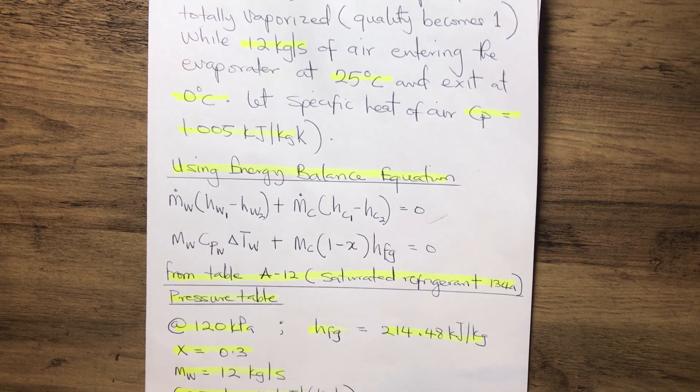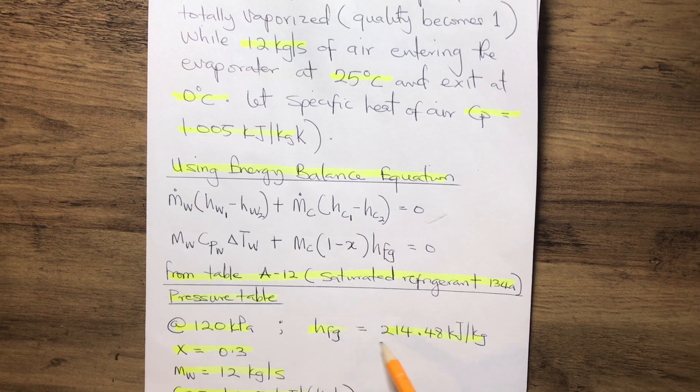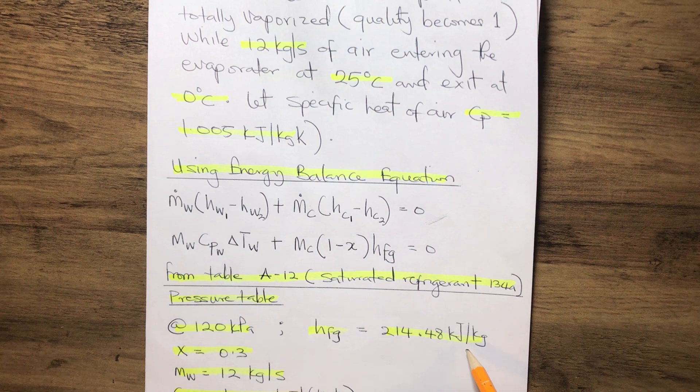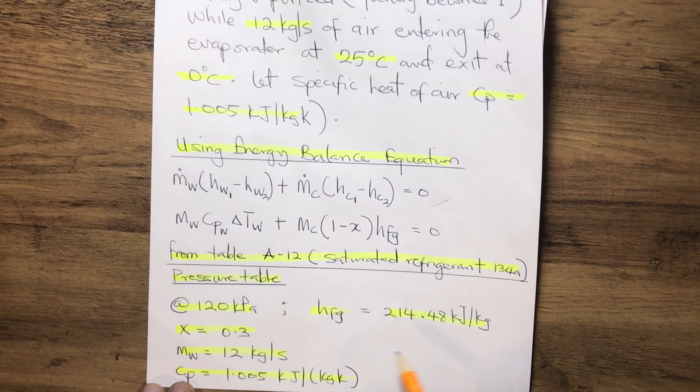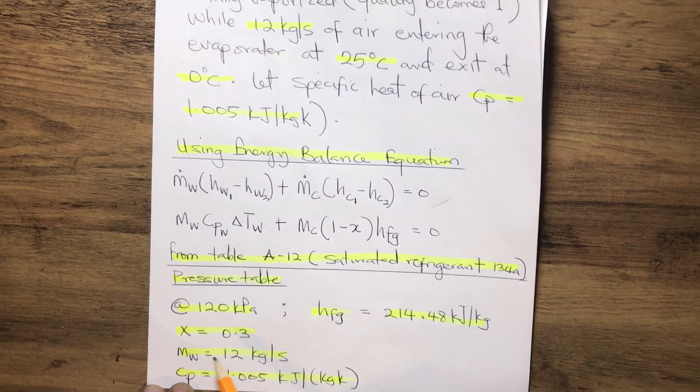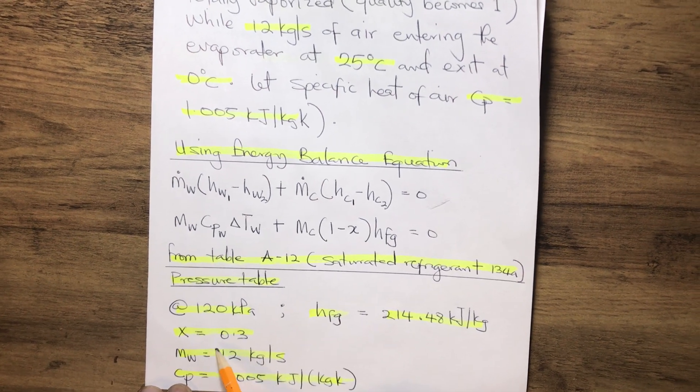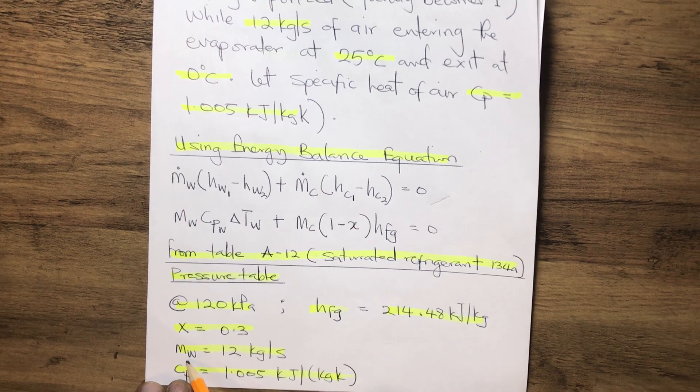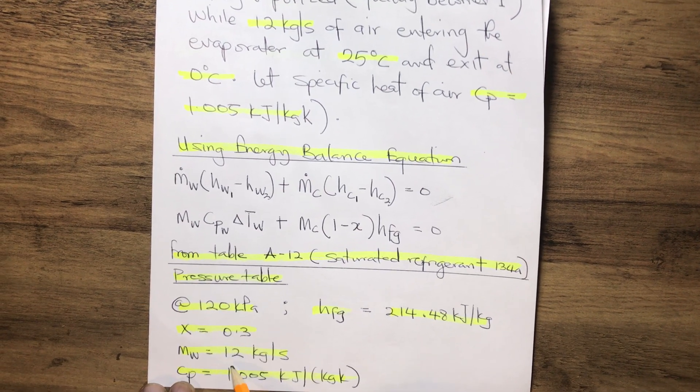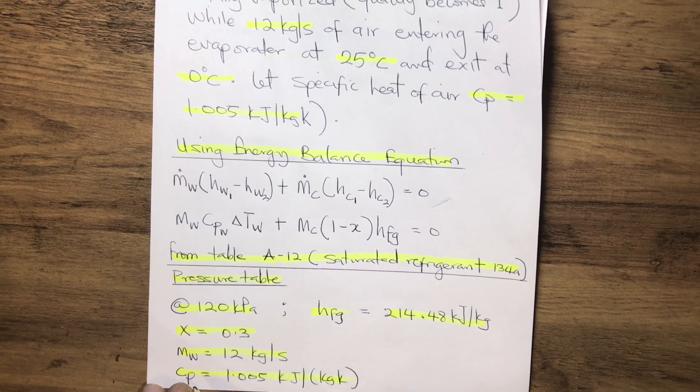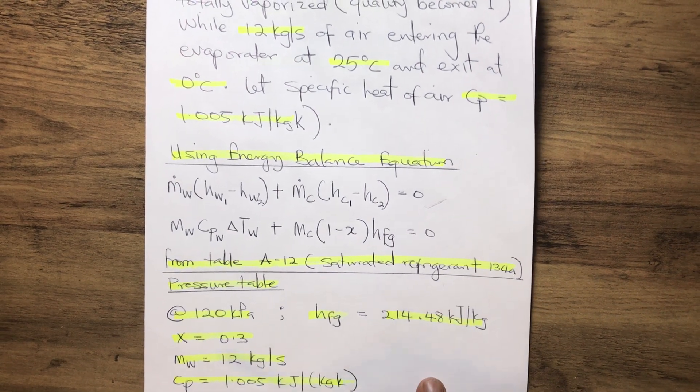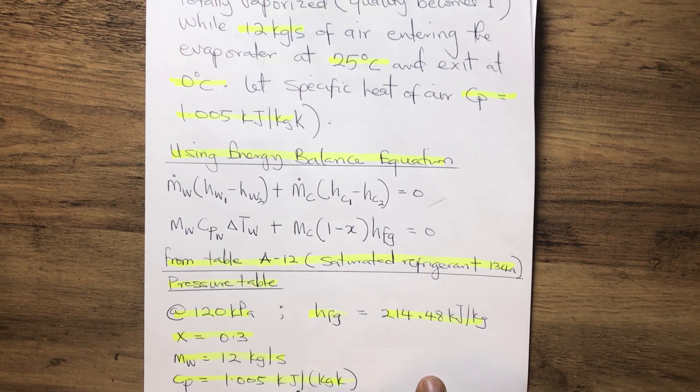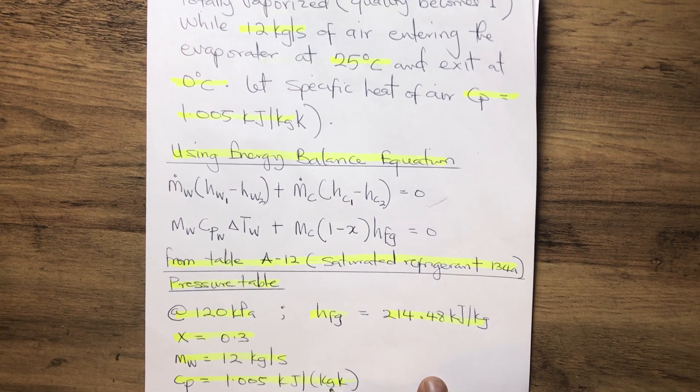Now, let's pull out the parameters. We have our HFG, which is 214.48 kilojoules per kilogram. We have our X, which is the quality, which gives us 0.3. We have the mass of the working fluids, which is 12 kilograms per second. We have the CP, which is the specific heat of the air, 1.005 kilojoules per kilogram per Kelvin.